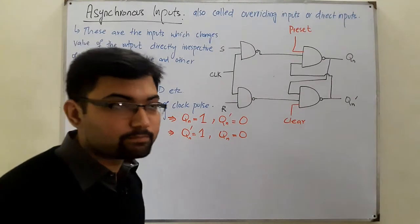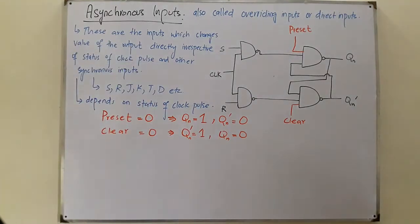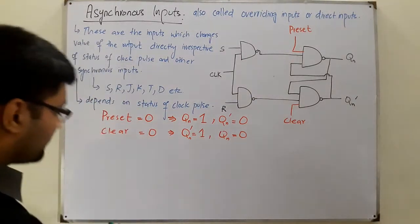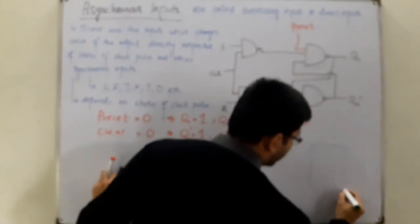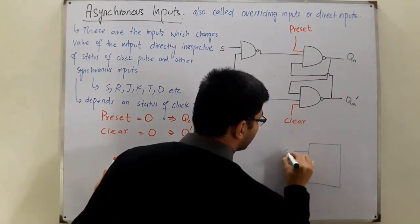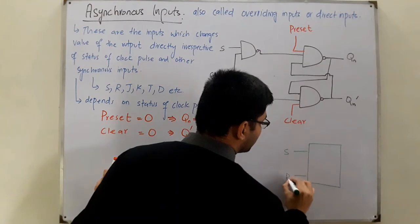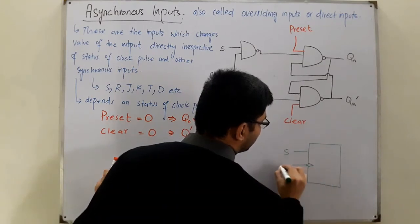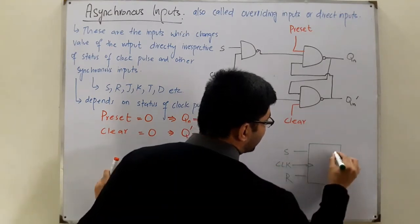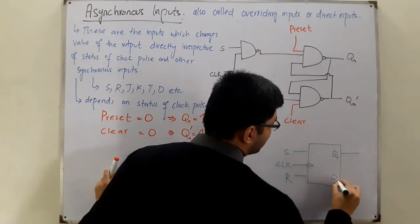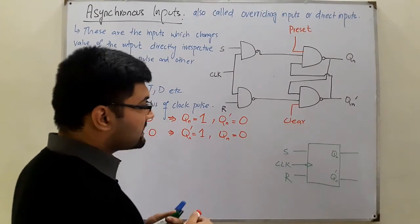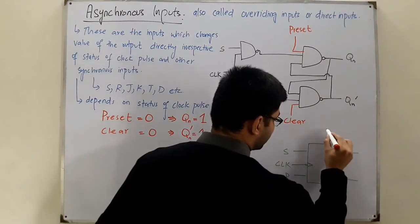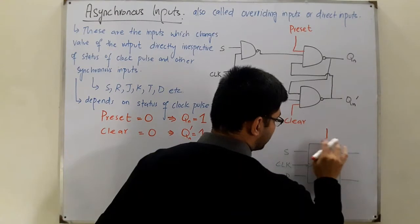Now let's draw the block diagram. This is the S input, R input, the clock pulse, Q_n, and Q_n complement. The preset is shown like this and the clear signal like this.